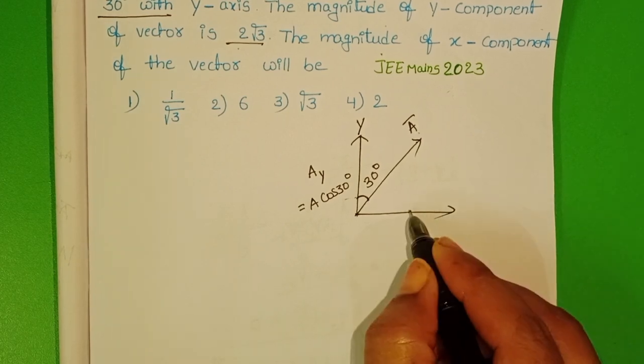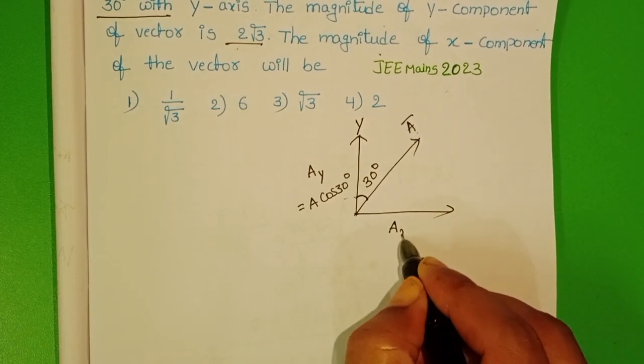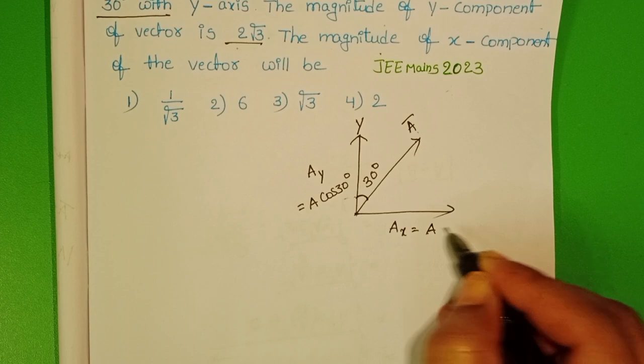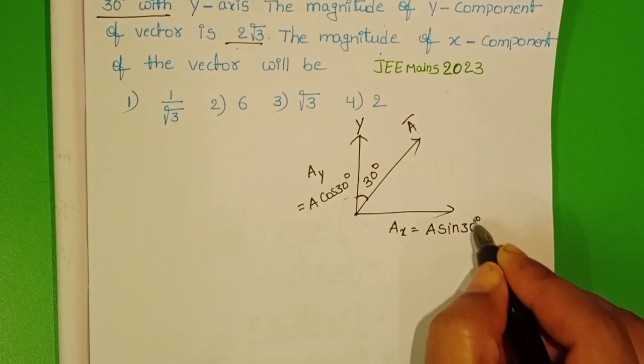And along X direction, the component of the vector AX equals A sin 30 degrees.